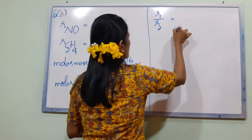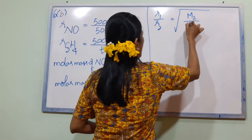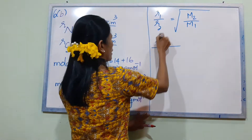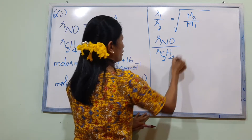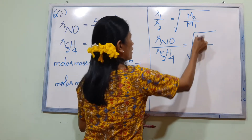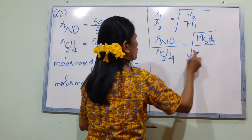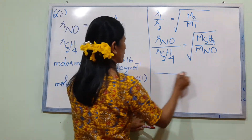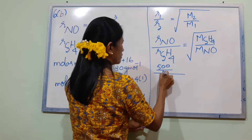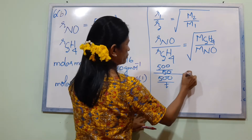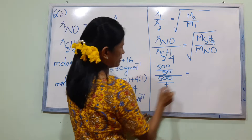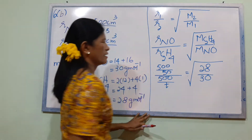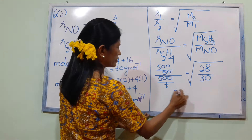Using Graham's Law: R1 divided by R2 equals the square root of M2 divided by M1, where R1 is the rate of NO and R2 is the rate of C2H4. So R-NO divided by R-C2H4 equals the square root of M-C2H4 divided by M-NO, which is the square root of 28 divided by 30. The time taken is 500 divided by 50 seconds.